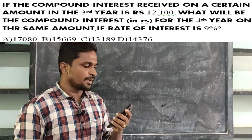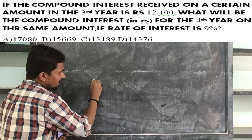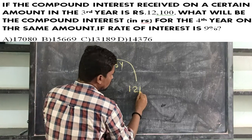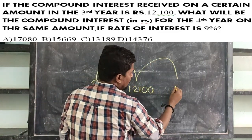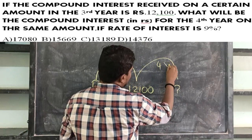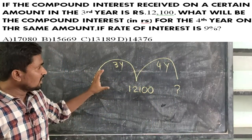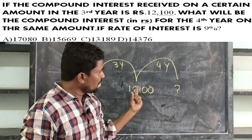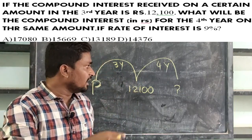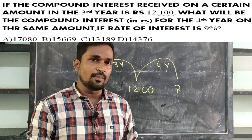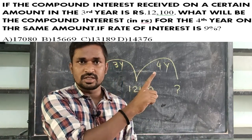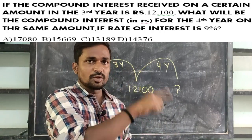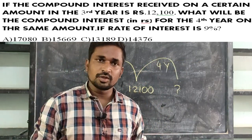The rate of interest is 9%. If you know the amount of 3 years, it will be 10,100. If you know the amount of 4 years, you will find the amount of 4 years. If you know the amount of 3 years, you will find the amount of 4 years.